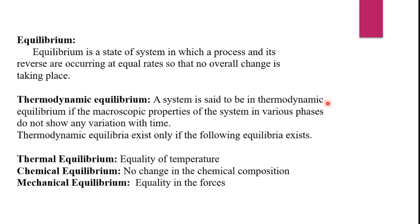Now, thermodynamic equilibrium. A system is said to be in thermodynamic equilibrium if the microscopic parameters of the system in various phases do not show any variation with time. Thermodynamic equilibrium exists only and only if the following equilibria exist: thermal equilibrium, chemical equilibrium, and mechanical equilibrium.